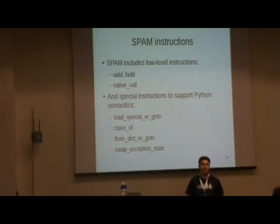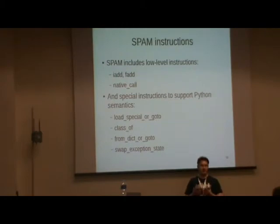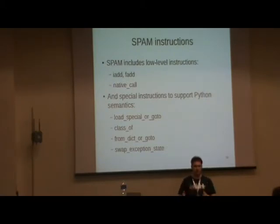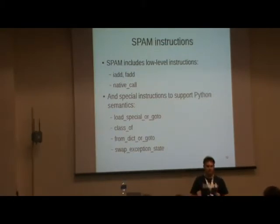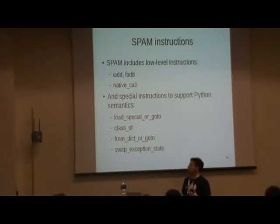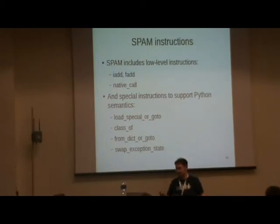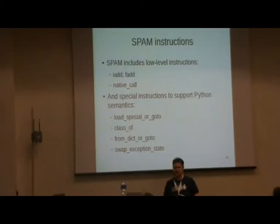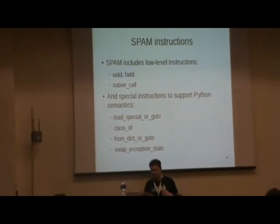This is what we call load_special, with a goto variant. The goto version exists because sometimes that attribute just won't be there — we don't want to throw exceptions in this state while looking for simple atomic bytecodes. So the goto variant finds the special attribute, or if it's not there, makes a branch. The 'class' instruction just grabs the type of something — a very simple primitive. 'from_dictionary_or_goto' looks for an attribute in the object's dictionary, or jumps if it's not there or if the object doesn't have a dictionary. And swap_exception_state is a funny little thing needed for generators.